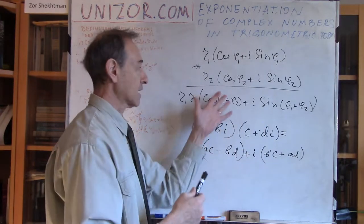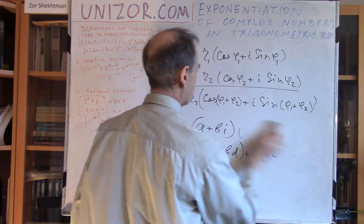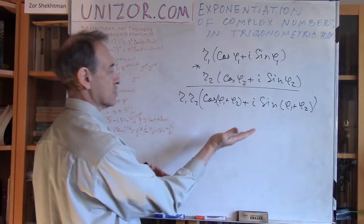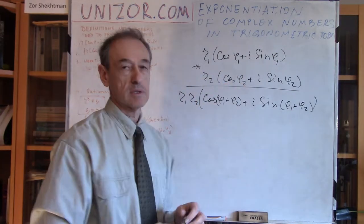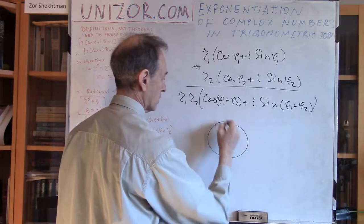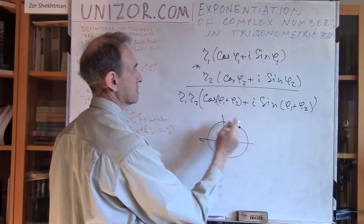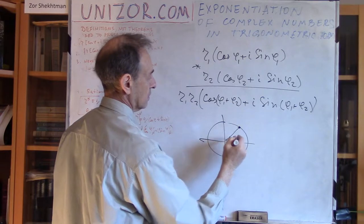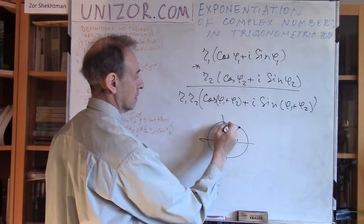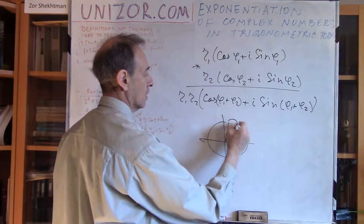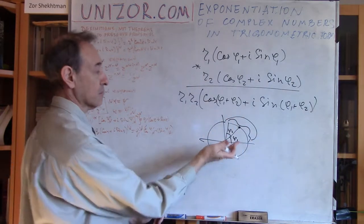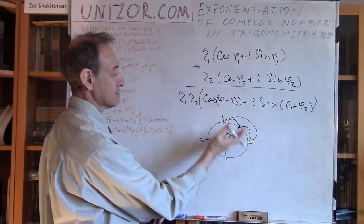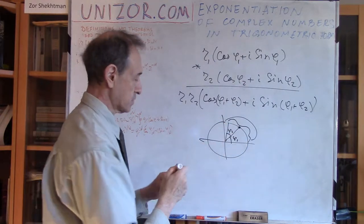But this has a very natural geometric representation. Remember, if r1 and r2 are equal to 1, then we are just turning the point on the unit circle, which is represented by this particular angular representation where this is the angle phi1. We are turning by angle phi2, getting phi1 plus phi2. So multiplication on the unit circle with r1 and r2 equal to 1 is basically a rotation by this particular amount.